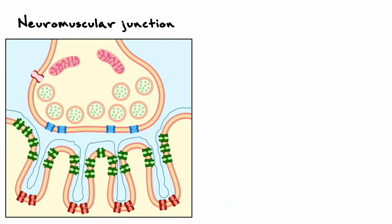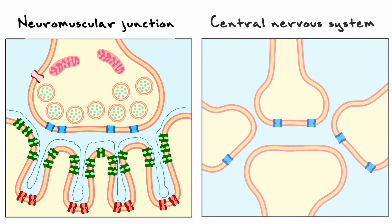Although the neuromuscular junction is a very appropriate model to describe how chemical synapses function, it still lacks a lot of features that synapses in the central nervous system have, which we are now ready to consider. The first main difference is the quantity of innervation that the postsynaptic cell receives. At the neuromuscular junction, the muscle fiber is usually innervated by one motor neuron, whereas in the central nervous system, neurons can receive up to a thousand connections.